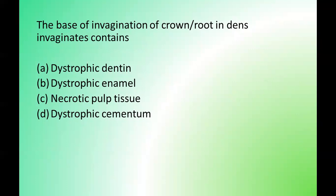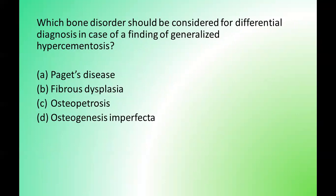Next question: the base of invagination of the crown-root in dens invaginatus contains which of the following? Options are: normal enamel, dystrophic enamel, necrotic pulp tissue, dystrophic cementum. The correct answer is option B — dystrophic enamel. Next question: which bone disorder should be considered for differential diagnosis in a case of generalized hypercementosis? Options are: Paget's disease, fibrous dysplasia, osteopetrosis, osteogenesis imperfecta. The correct answer is option A — Paget's disease, as generalized hypercementosis is generally found in Paget's disease.